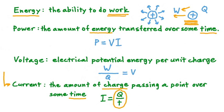With this substitution made, we now have our equation for power for an electrical component. It's often expressed this way: P is equal to I, current, times V, voltage.